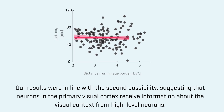Our results were in line with the second possibility, suggesting that neurons in the primary visual cortex receive information about the visual context from high-level neurons.